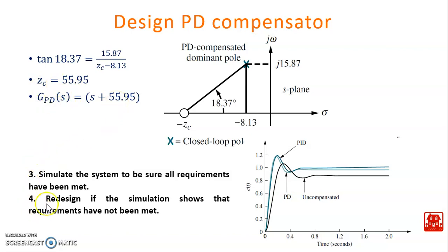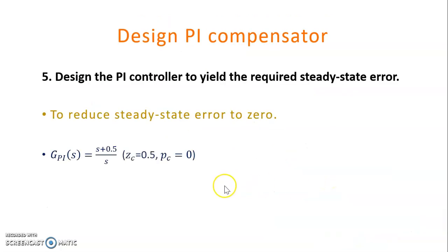The next step is to simulate the system and redesign if the PD controller simulation shows requirements have not been met. This has been done using MATLAB. The light green curve is the PD controller response and the black curve is the uncompensated system. The next step is to design the PI controller to yield the required steady state error.